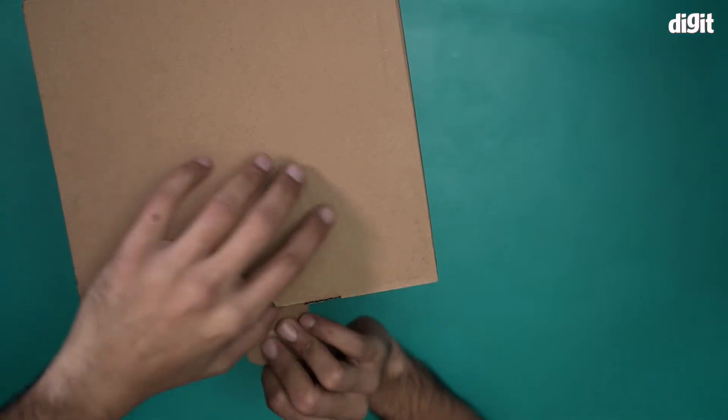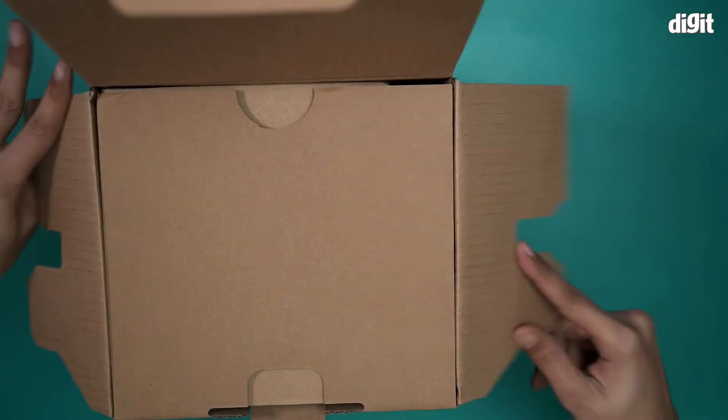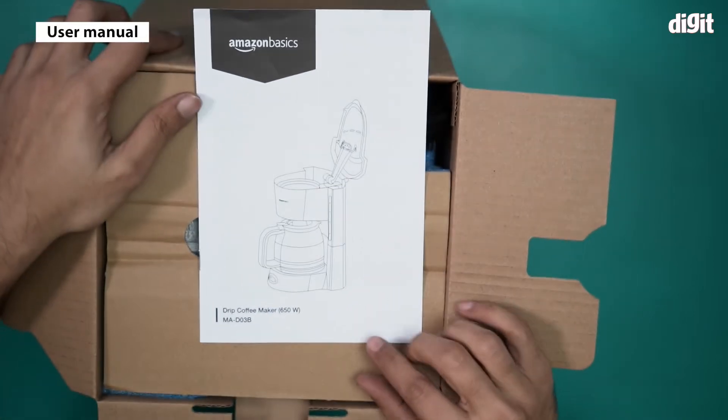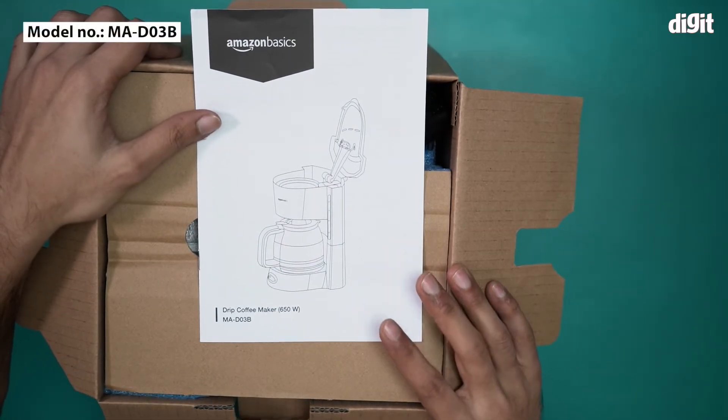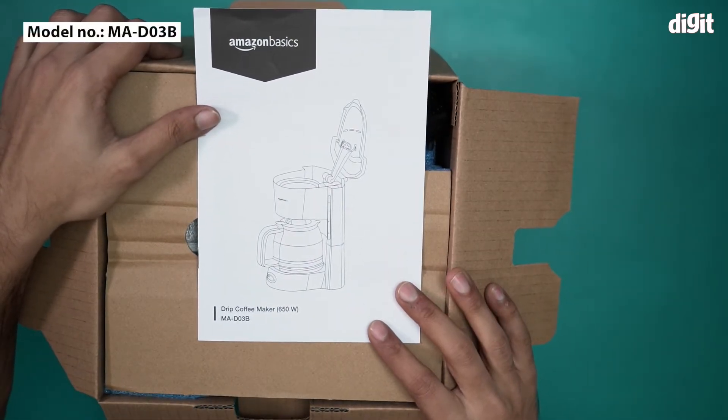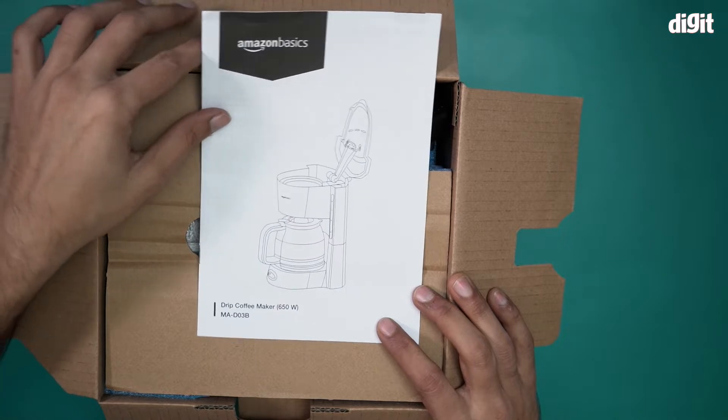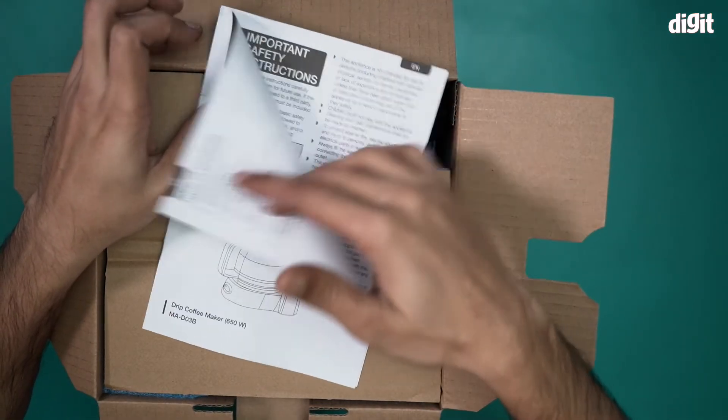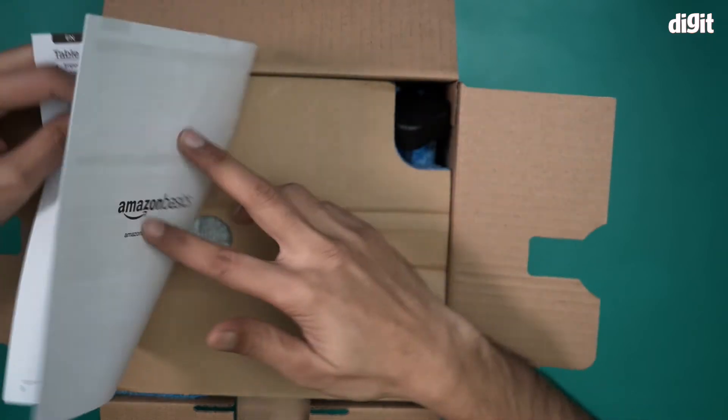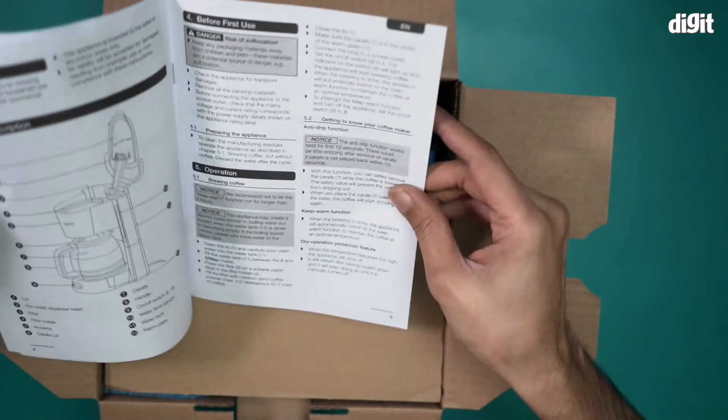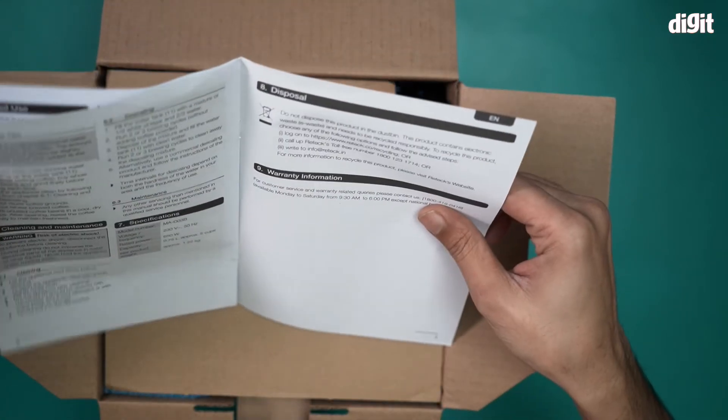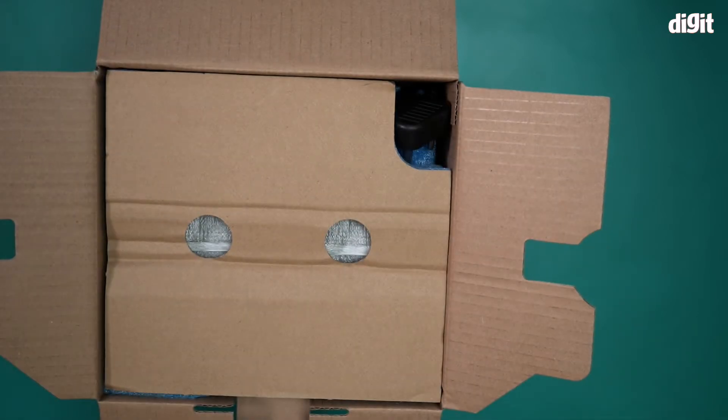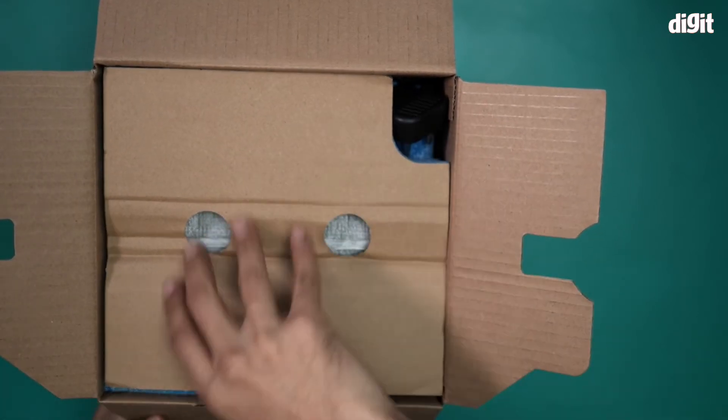Right on top we have a user manual. This is a user manual for the MADO3B drip coffee maker. This is the model number MADO3B. There's an illustration of the coffee maker right on top. Notice there's a carafe over here as well. All the specifications are mentioned along with disposal and also warranty information.